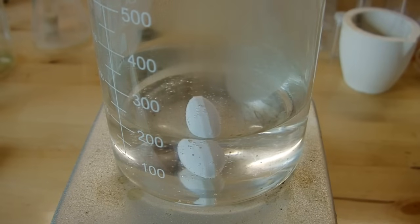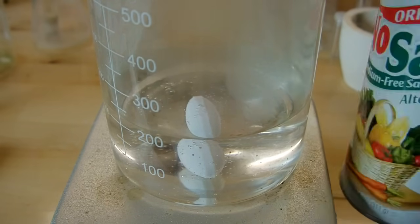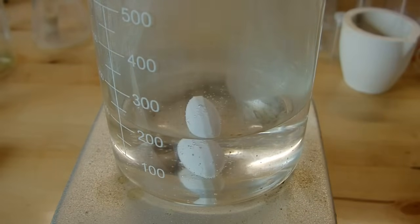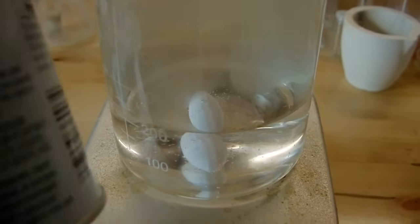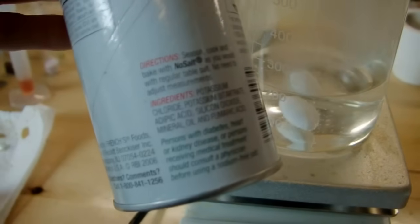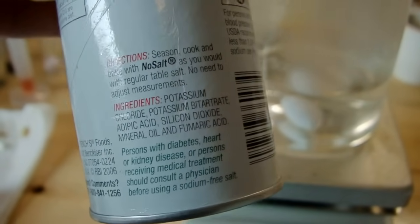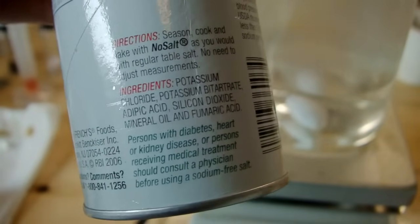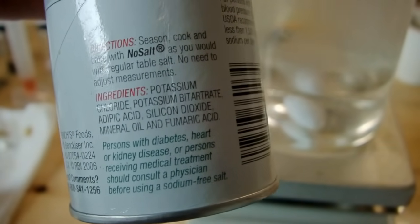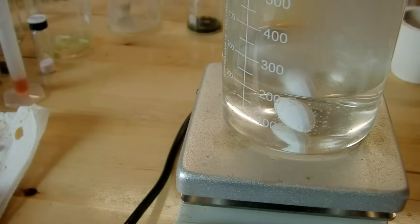The potassium chloride I have is from NoSalt, which you can get at grocery stores. It's a sodium-free salt alternative. If you look at the ingredients of NoSalt, there's potassium chloride, which is what we're after, and a whole bunch of other stuff: potassium bitartrate, adipic acid, silicon dioxide, mineral oil, and fumaric acid.